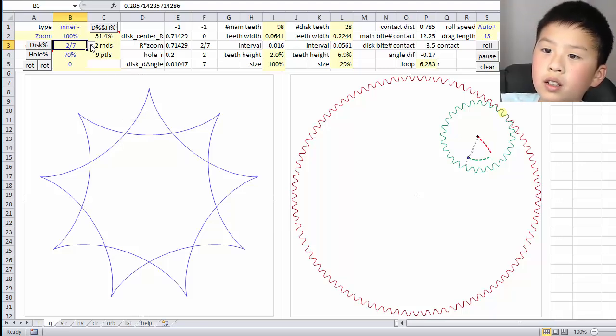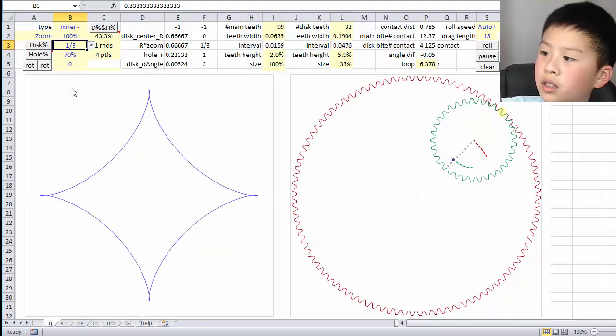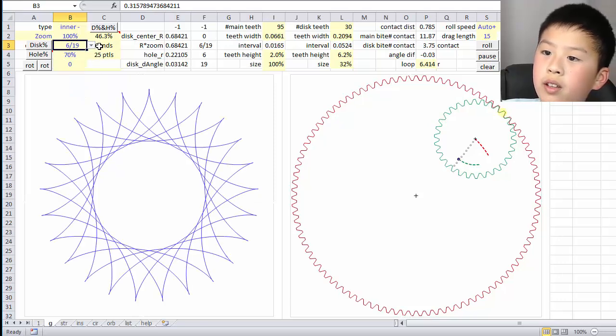You may have noticed that the disk sizes are in fractions. This is because if they were not in fractions, it might just continue rolling along forever, never to come to the same spot again. The numerator is the amount of rounds it will do. So if I were to go to like a simpler one like 1 over 3, it does one round and the numerator is 1. But if I were to do 6 over 19, it does 6 rounds and has a lot of petals that point out.